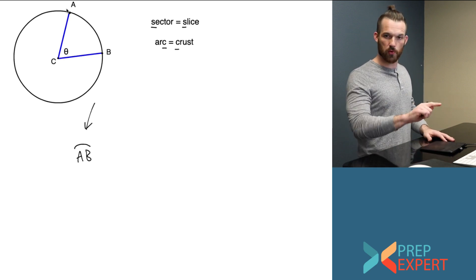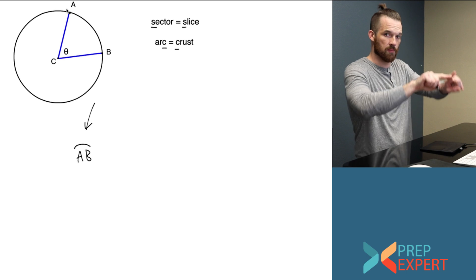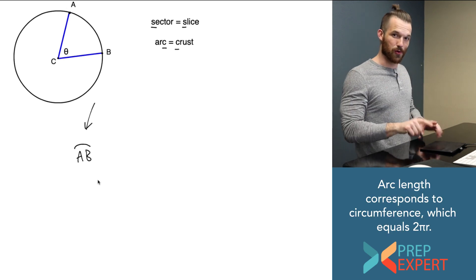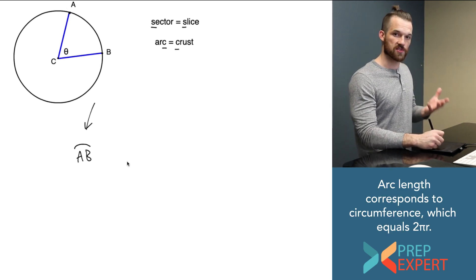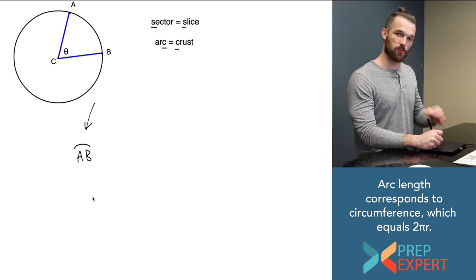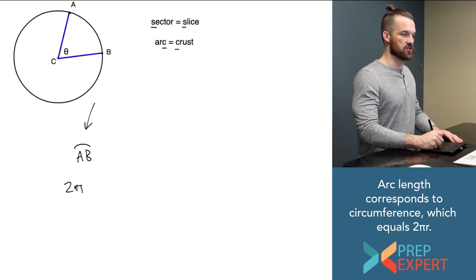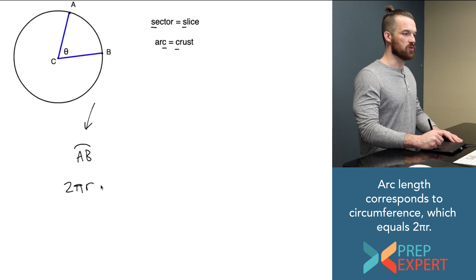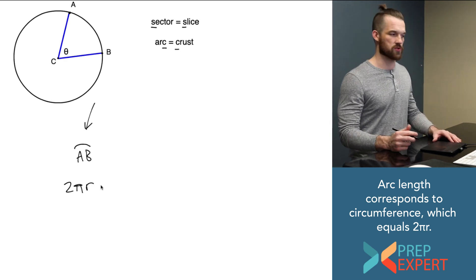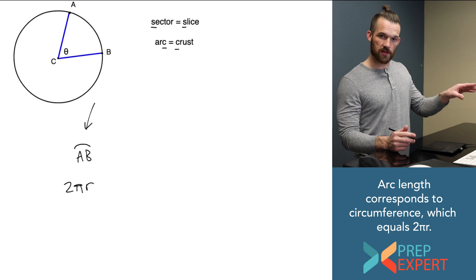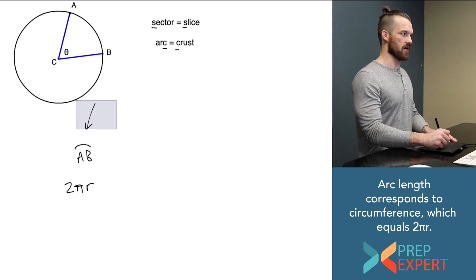What would the distance around the perimeter of the circle from A to B become if the sector were expanded to be the whole circle? It would be the circumference of the circle. So arc length will always correspond to circumference. Circumference can be written as 2πr. So remember, arc length always corresponds to circumference.